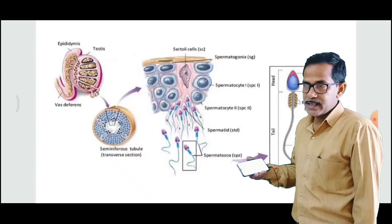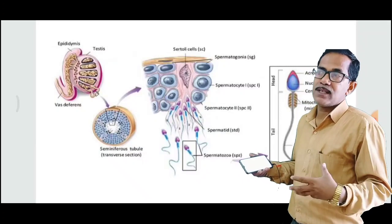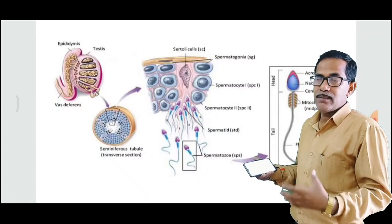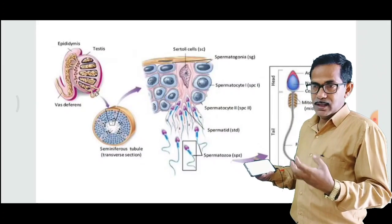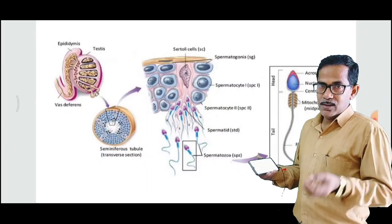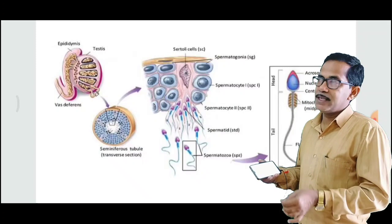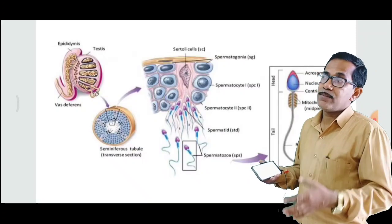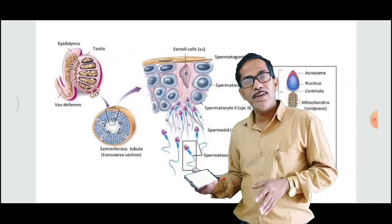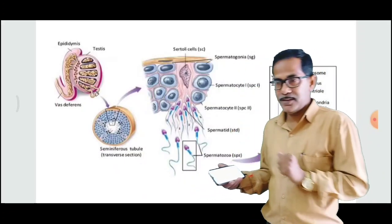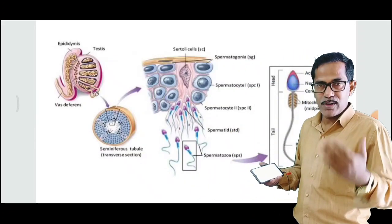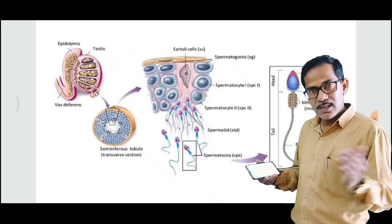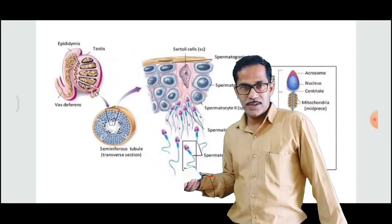These three glands provide fluidity to the maturing sperm. There is also the urethra, which connects to the penis. The sperm are released from the testes according to requirement, at the time of copulation, and are released through this pathway.